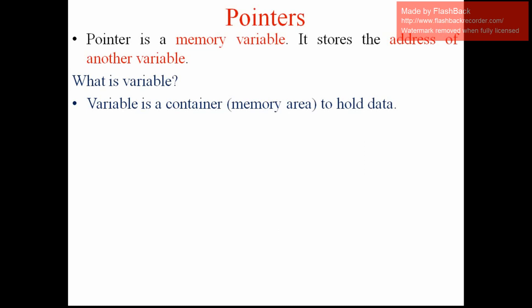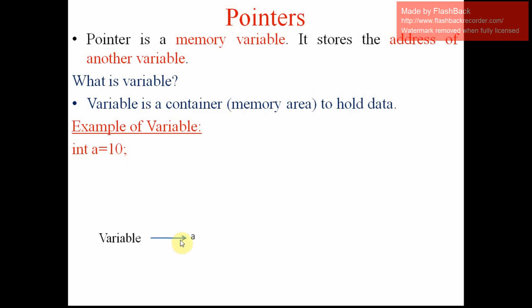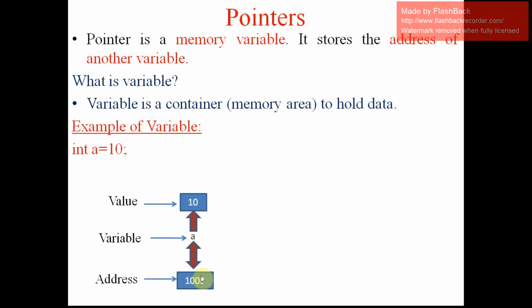We'll see the example. Here I am creating one variable called 'a'. Its data type is int and its value is 10. So the variable 'a' is created, and in this memory area or container the value 10 is stored. What is 'a' actually? It is one memory area which holds some data — the data is integer. So if it is a memory area, it will have some address.